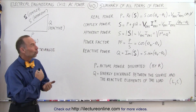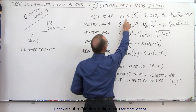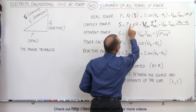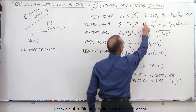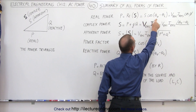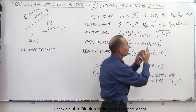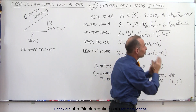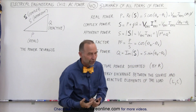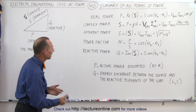First, the real power. The real power is the real part of the complex power, which is defined as the magnitude of the complex power times the cosine of the phase angle. Simply, it's voltage times current times the cosine of the phase angle, and we use the RMS voltage and RMS current.